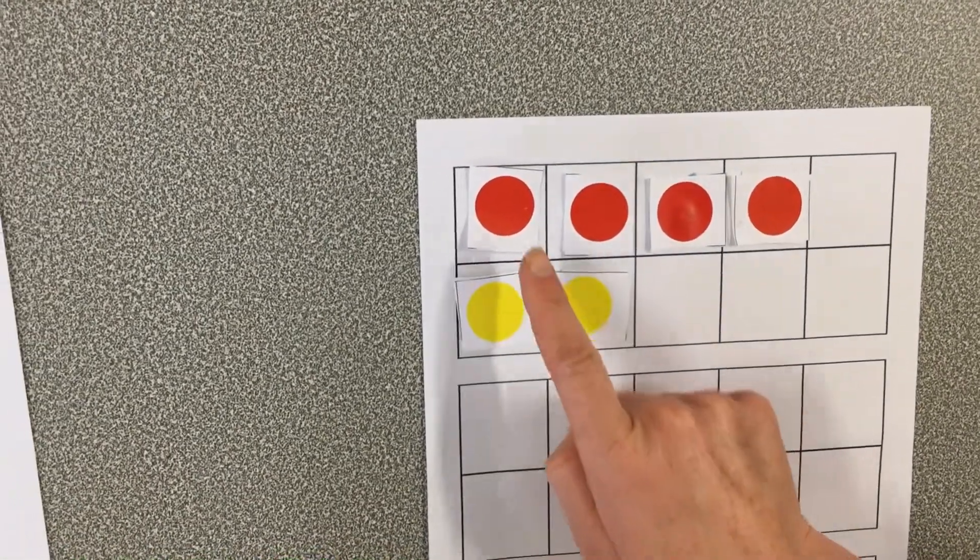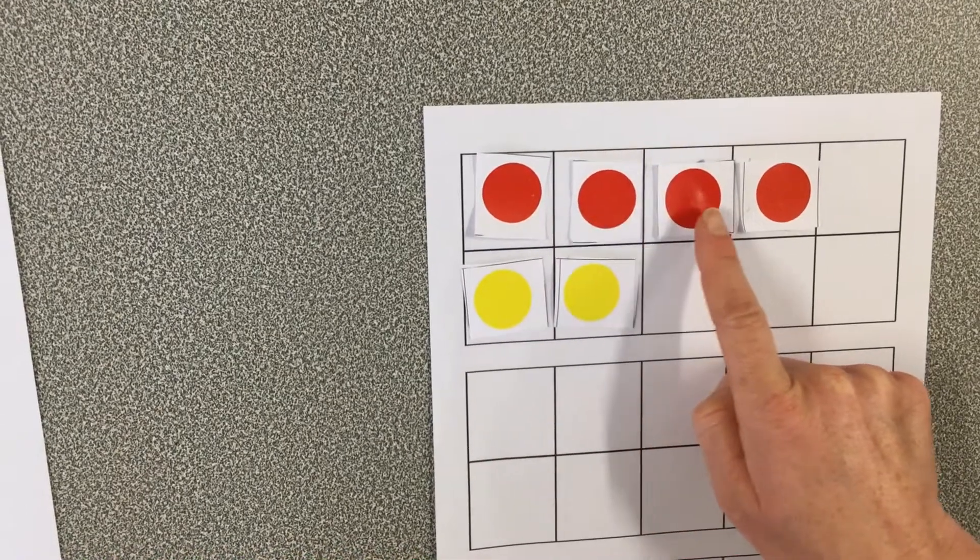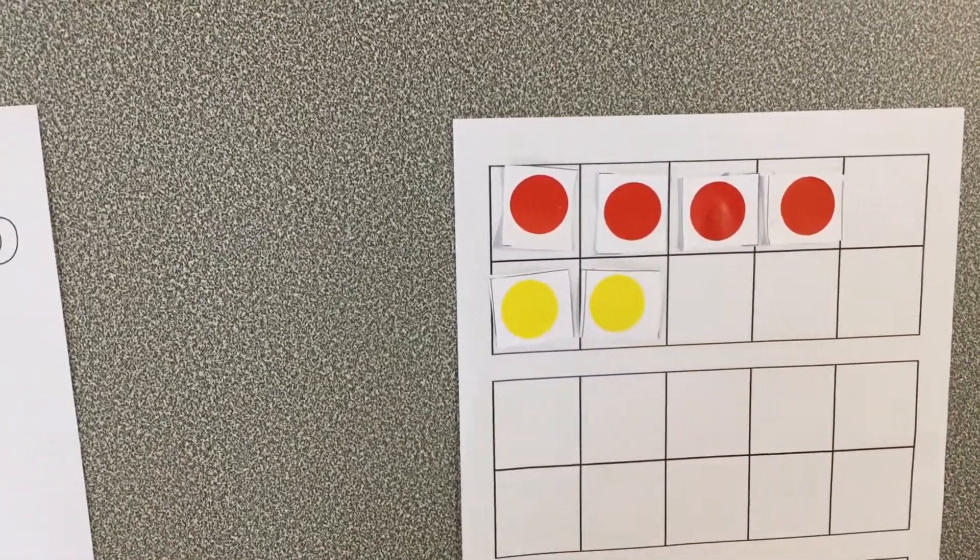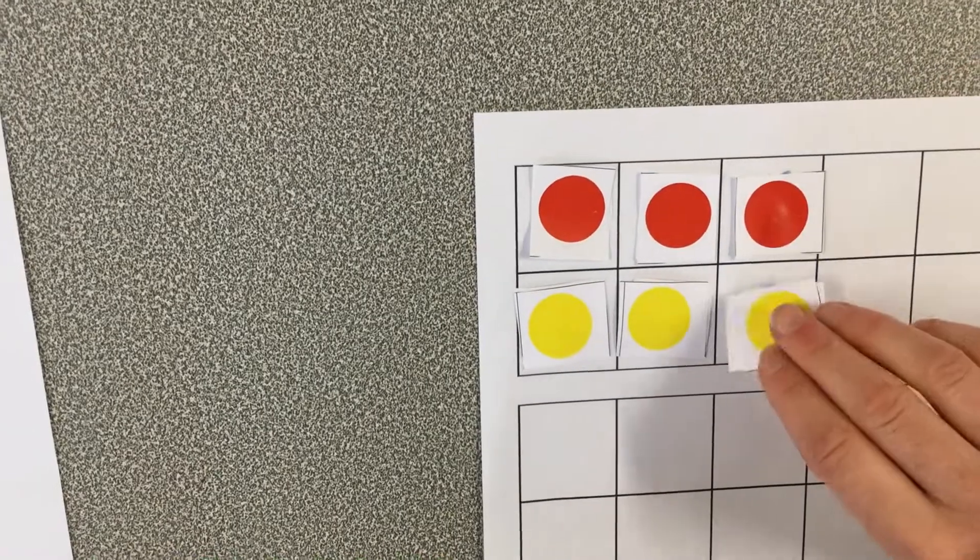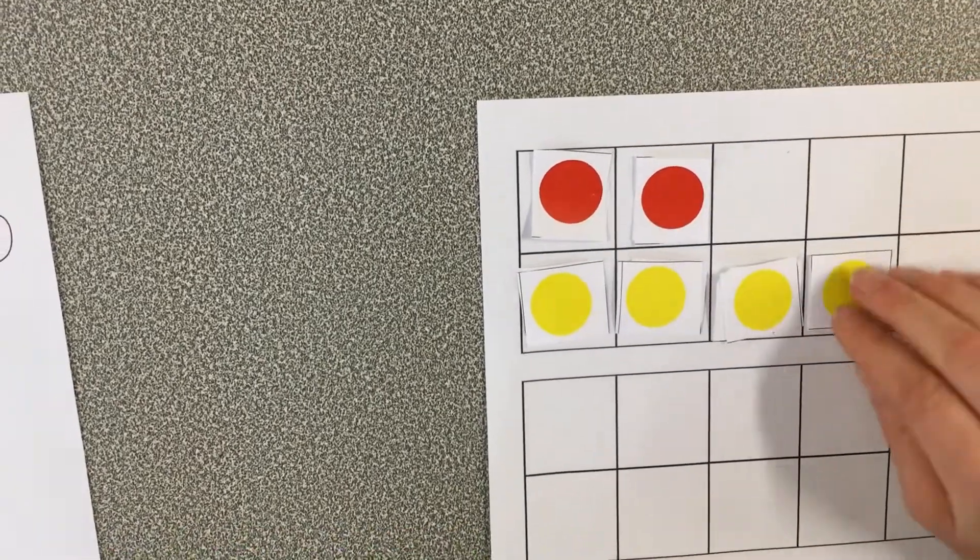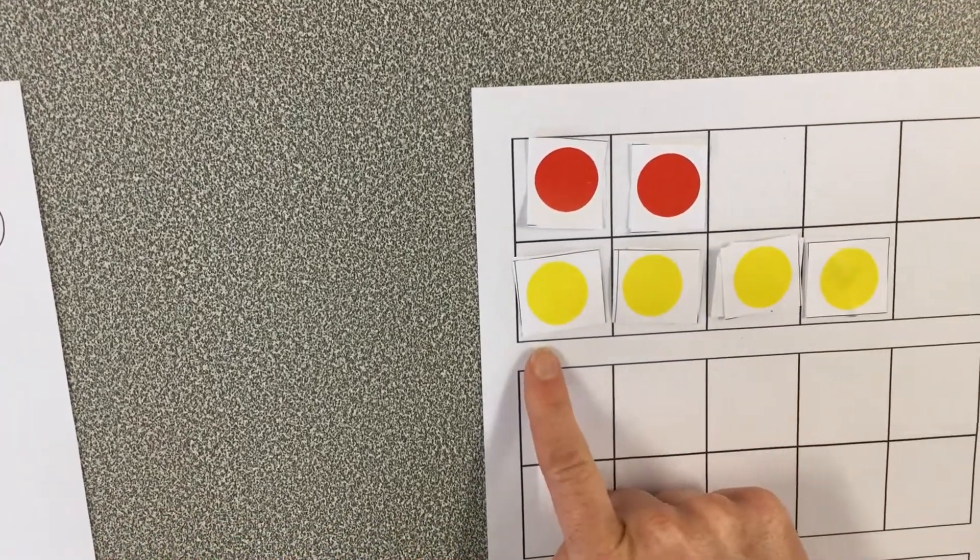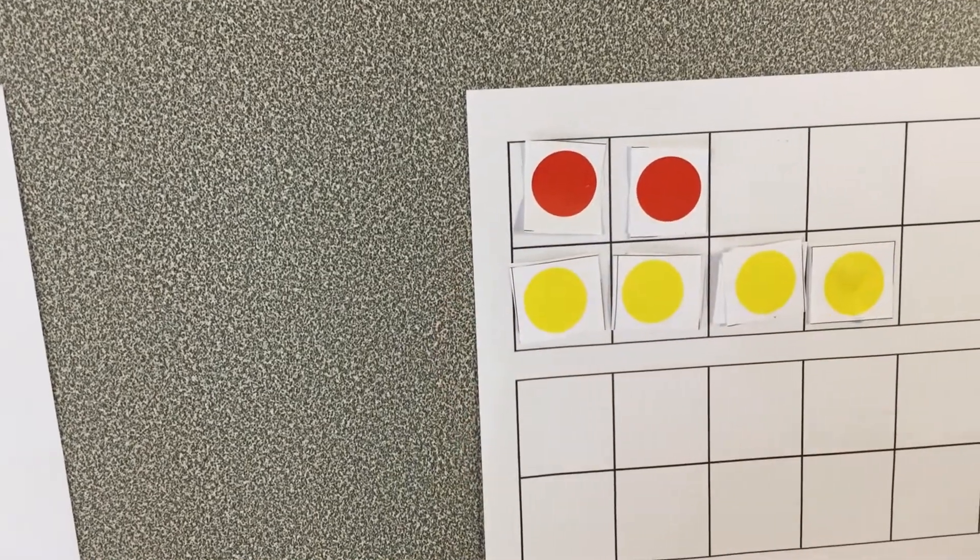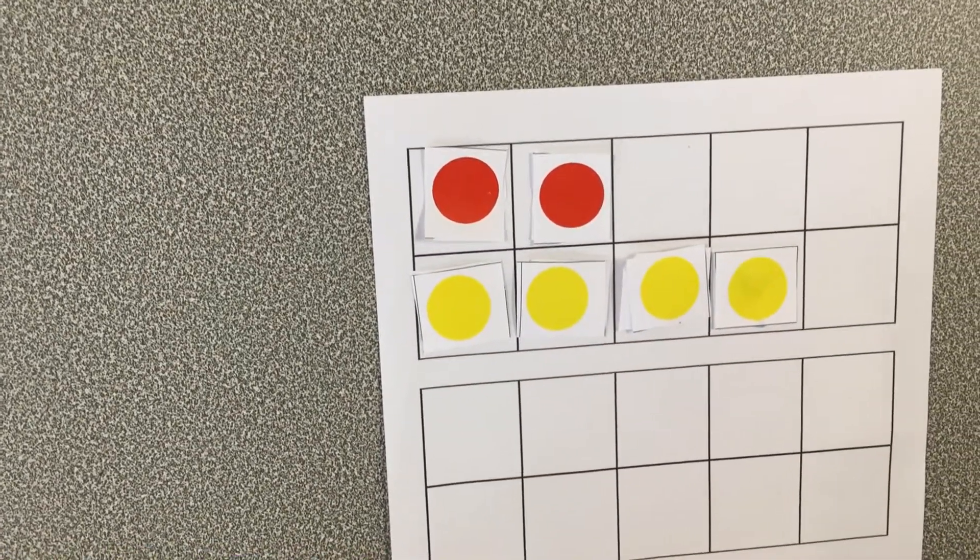Let's double check and count it again. One, two, three, four, five, six. Now I could even swap it. I could put these down here and now it's a group of four and a group of two that way. And guess what? It still makes six.